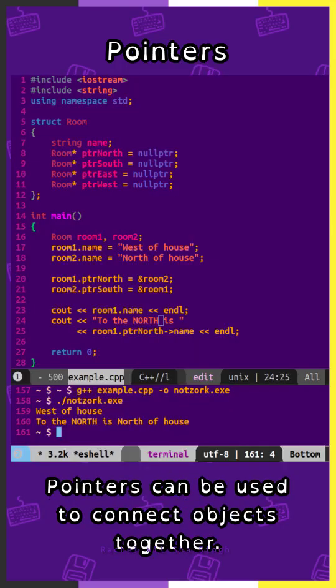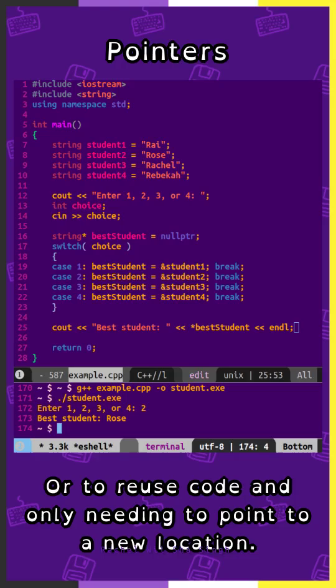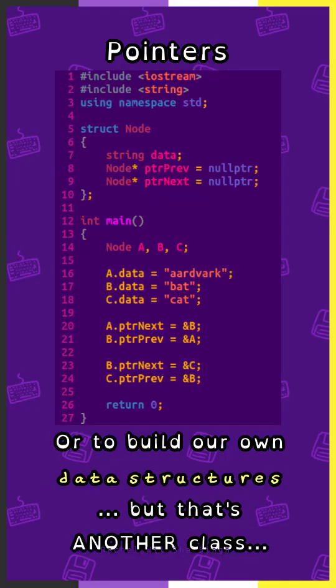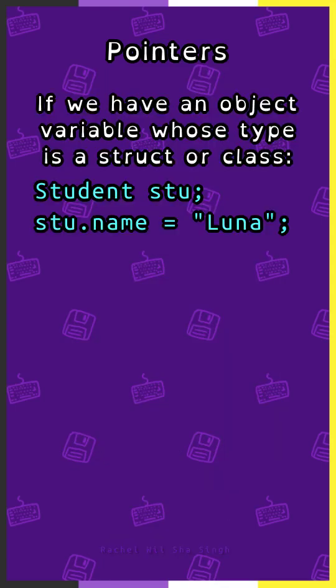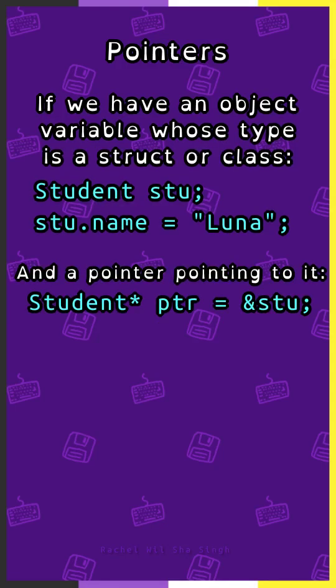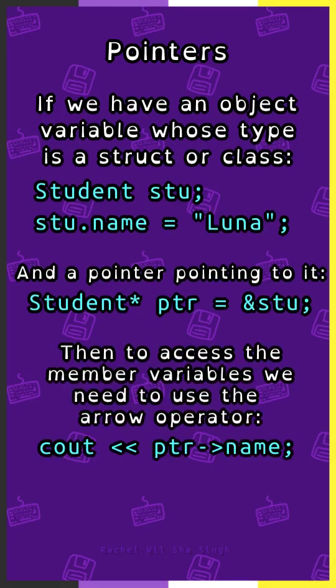Pointers can be used to connect objects together, or reuse code by only needing to point to a new location, or to build our own data structures — but that's another class. If we have an object variable whose type is a struct or class, and a pointer pointing to it, then to access the member variables, we need to use the arrow operator.